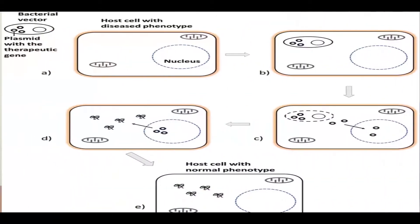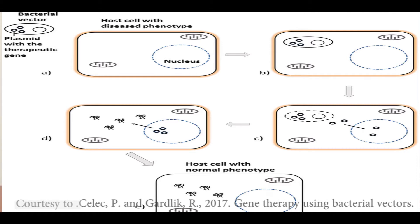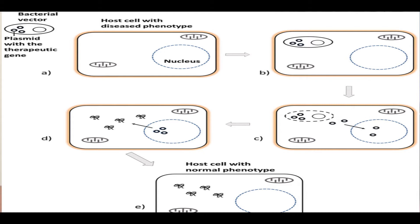The genes located on the plasmids of the transformed bacteria strains are delivered and expressed into the cells. The gene delivery may be intracellular or extracellular and it has a potential to express various plasmid-encoded heterologous proteins like antigens, toxins, hormones, enzymes, etc., in different cell types.